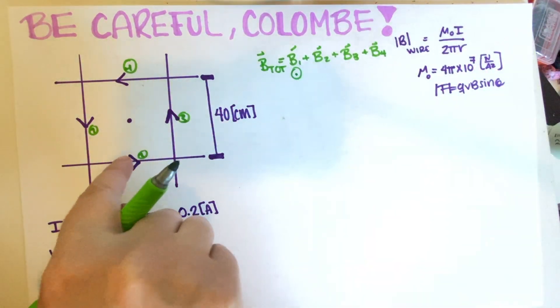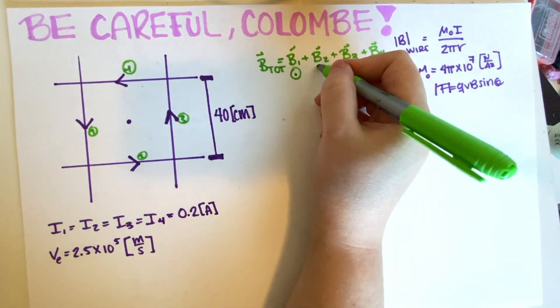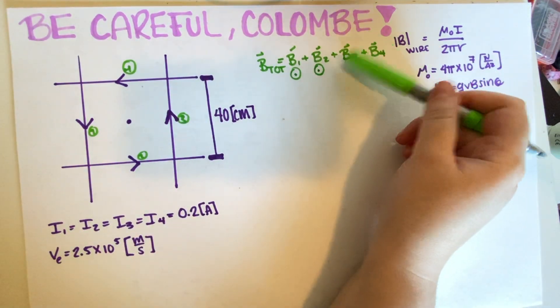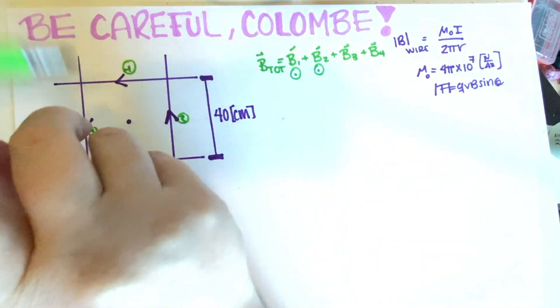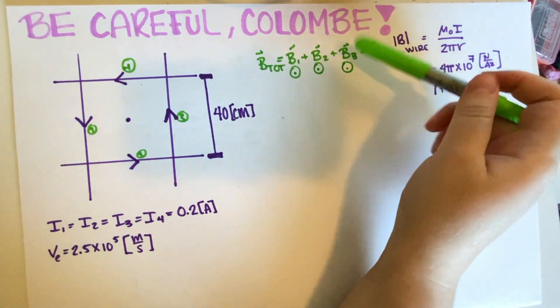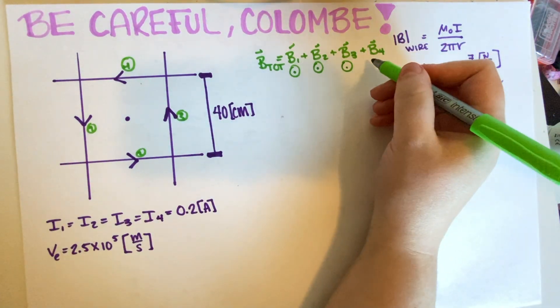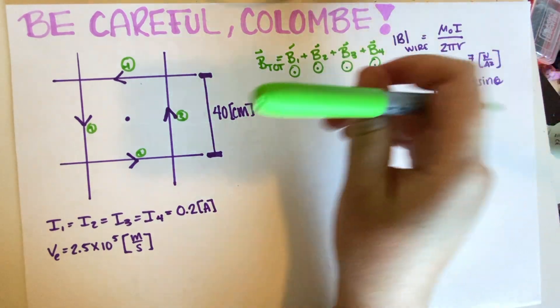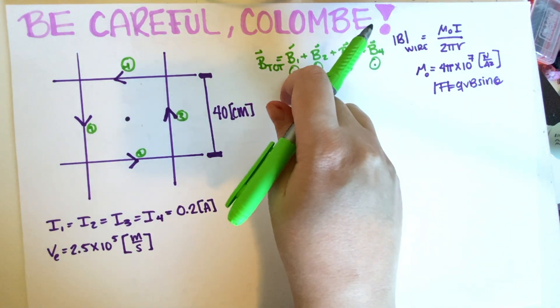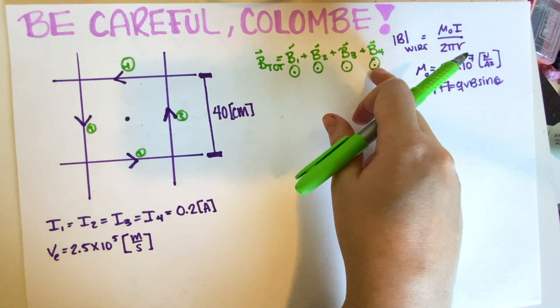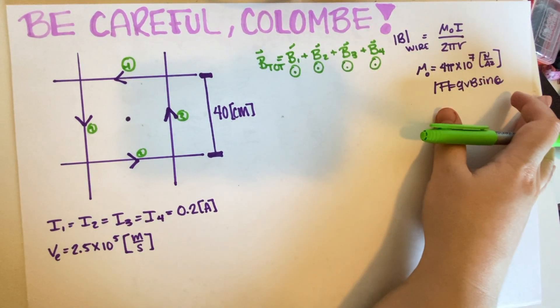Then for B2 twirl again, but now twirl using this wire and this will be out of page. For the third one twirl again and you're going to get out of page. For the fourth one twirl again and then you're going to get out of page. Again, you're just looking at the magnetic field at this point. So all of them are going to be in the same direction, which means that we just have to add them up and that's it.